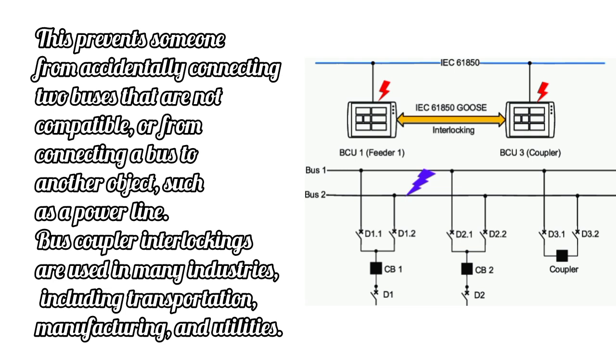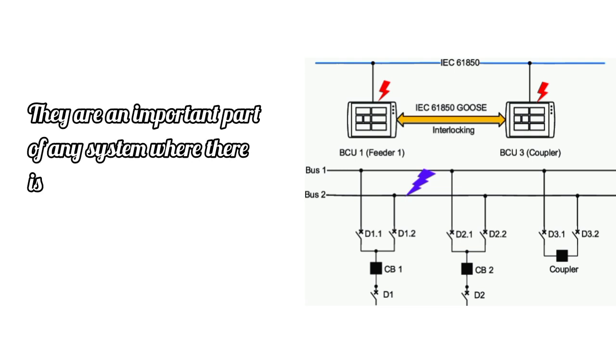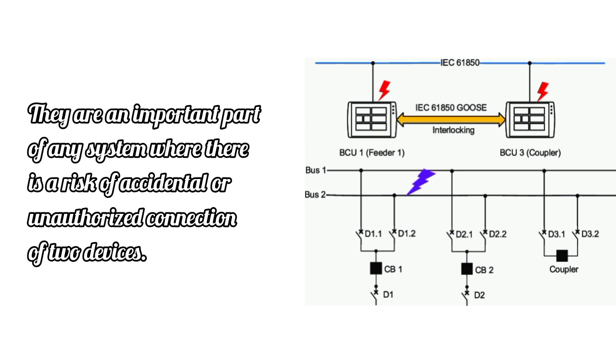Bus coupler interlockings are used in many industries, including transportation, manufacturing, and utilities. They are an important part of any system where there is a risk of accidental or unauthorized connection of two devices.